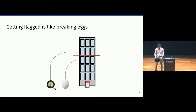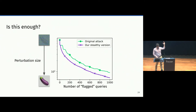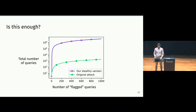And do we actually manage to break fewer eggs? Indeed, in this plot we show how the perturbation size reduces with the number of flagged queries that we make. We want the perturbation to be as small as possible with the least number of flagged queries. We show one out of the four attacks we consider in our work. By swapping binary searches with line searches, along with other tweaks to hyperparameters, our attacks are stealthier and issue fewer flagged queries. This example is on ResNet and ImageNet. We also unfortunately do more queries overall — by actually four orders of magnitude more for this attack.